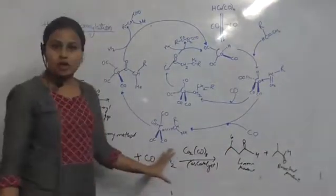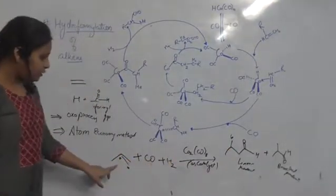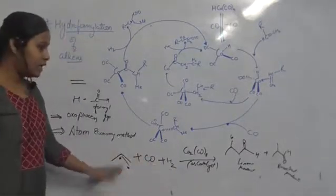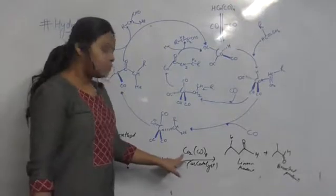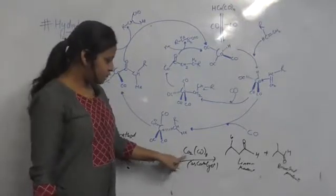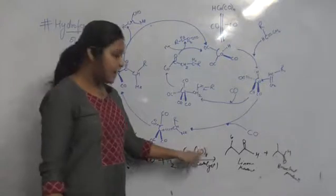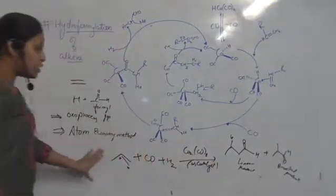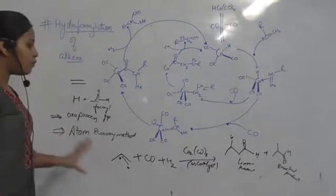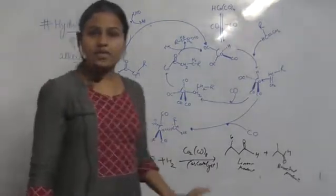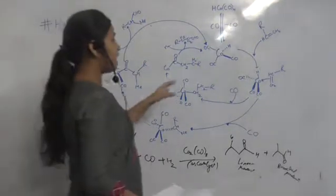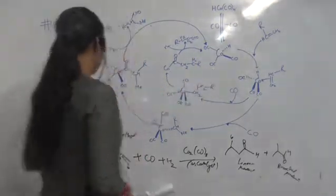So this was the complete reaction of hydroformylation. We used carbon monoxide plus H2 for the hydroformylation of this alkene, along with the cobalt catalyst Co2(CO)8, and we get two products: a linear product and a branched product. Now we will see the complete mechanism of how these products are formed.